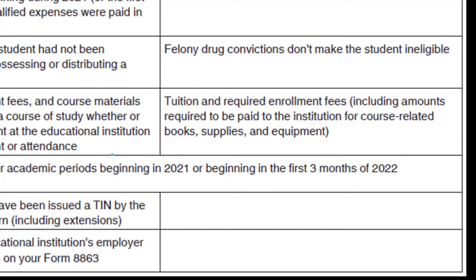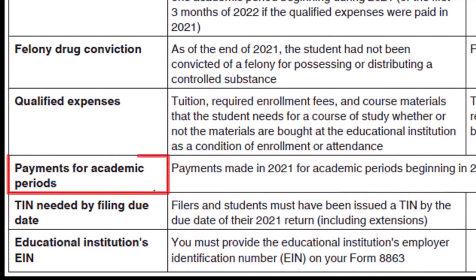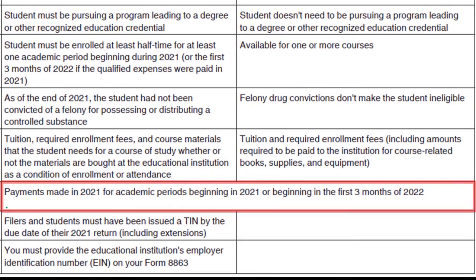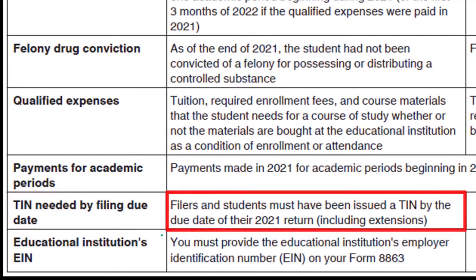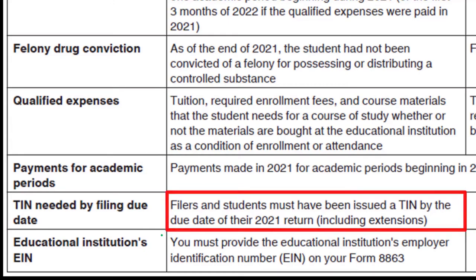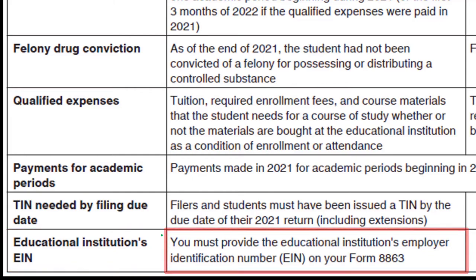Payments for academic periods: for both credits, payments made in 2021 for academic periods beginning in 2021 or in the first three months of 2022 qualify. TIN needed by the taxpayer's due date: filers and the student must have been issued a TIN by the due date of their 2021 return. For the American Opportunity Credit, you must also provide the educational institution's employer identification number (EIN).